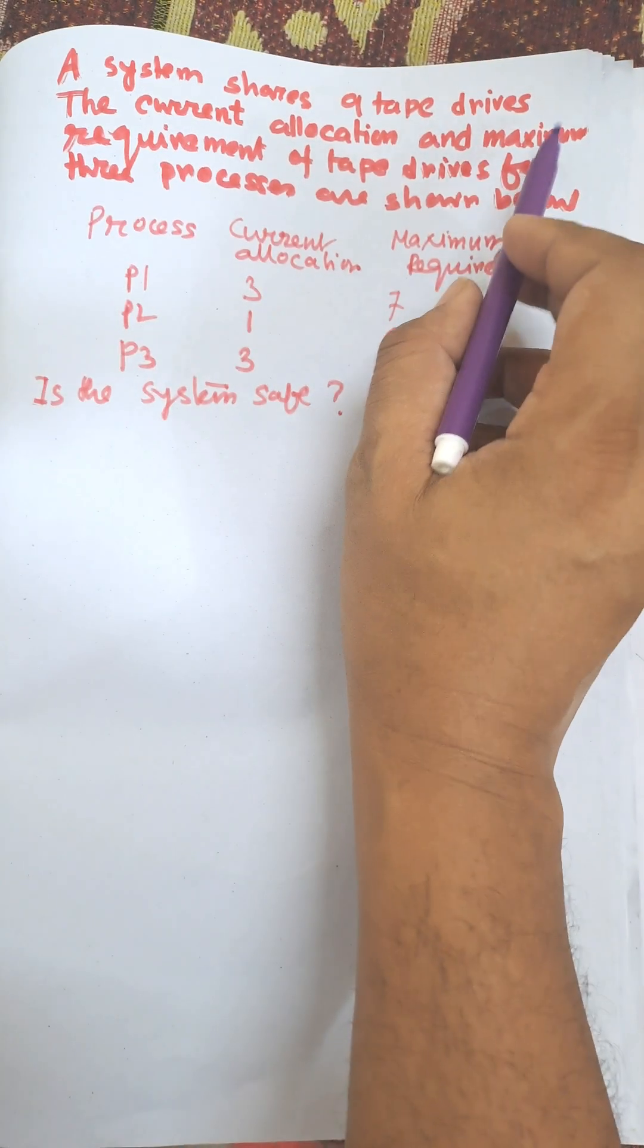Hi everybody, in this video I am going to solve the Banker's Algorithm for deadlock avoidance. Here there is a problem: a system shares nine tape drives.